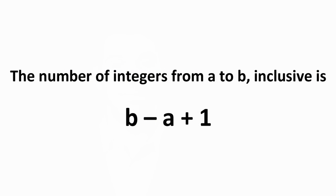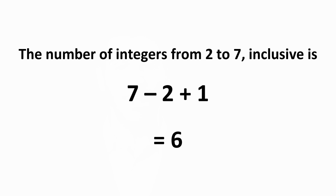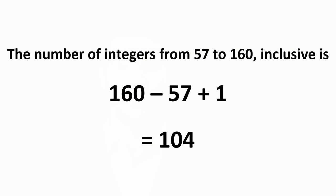Many students get confused when counting the number of consecutive integers in a list. The number of integers from a to b, inclusive, is b minus a plus 1. For example, the number of integers from 2 to 7 is 7 minus 2 plus 1 equals 6, and the number of integers from 57 to 160 is 160 minus 57 plus 1 equals 104.